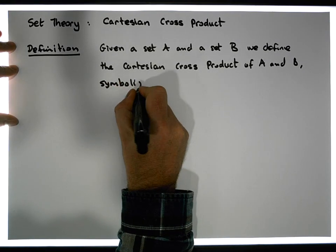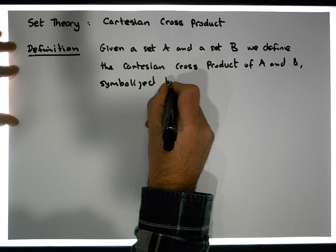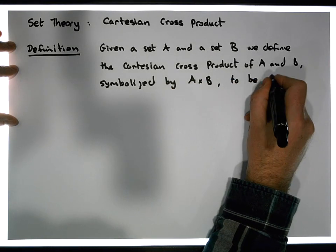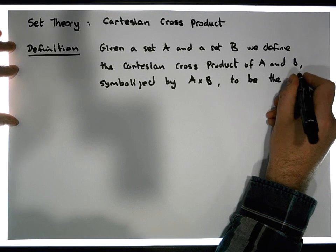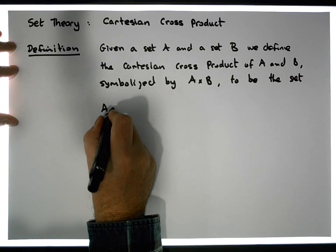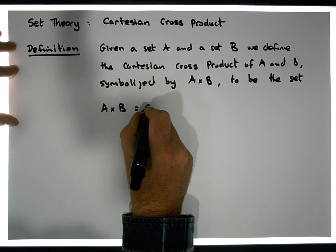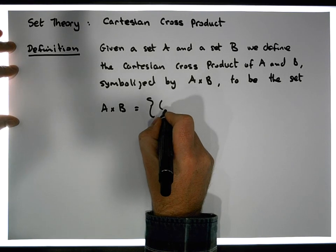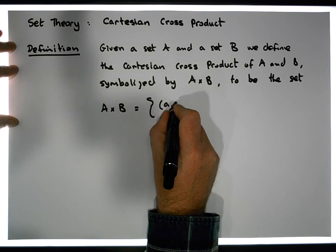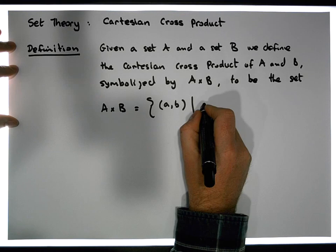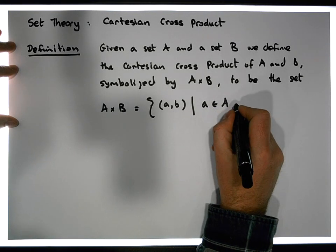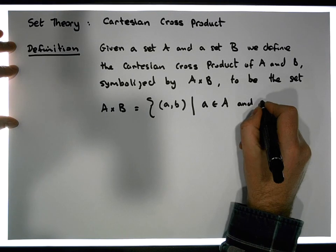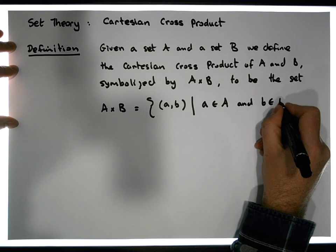Symbolized by A×B to be the set A×B equals the set that contains structures that look like this: open round brace (a,b) such that a is an element of A and b is an element of B.